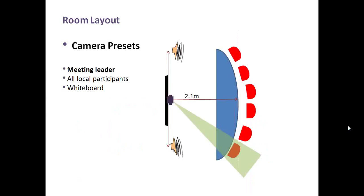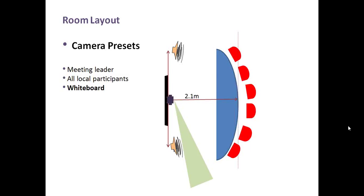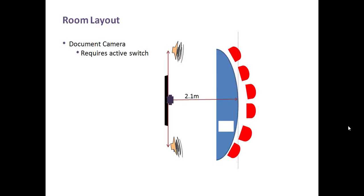Camera presets — there are lots of different ways to go, but the mandatory ones are: a preset for the meeting leader, a second preset that covers all participants, and if you're using a whiteboard, a preset to cover that as well. Those three are pretty mandatory. If you're using a document camera with the video platform, you need an active switcher for that camera. You also want the document camera within reach of the meeting leader.